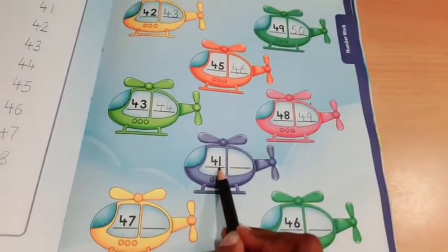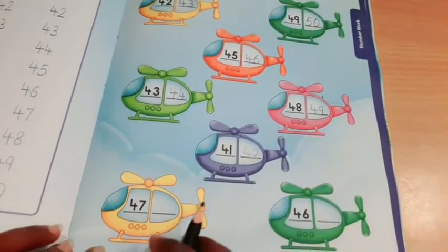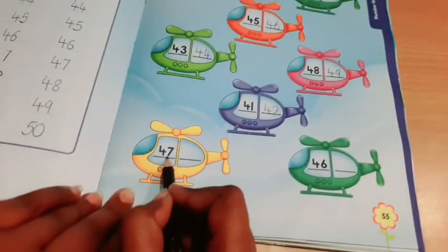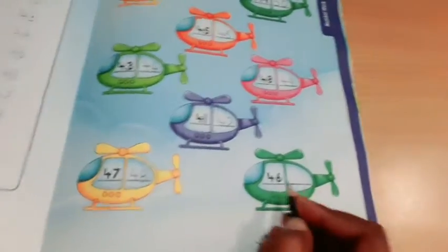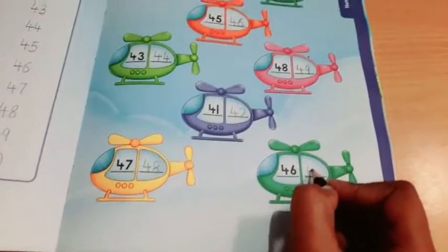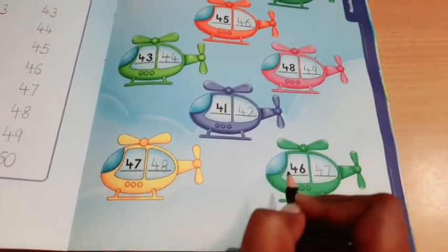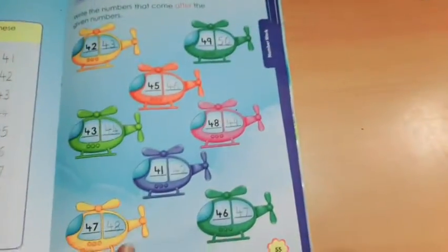Now this is 41, we will write 42. Next is 47, we will write 48. Now the next number is 46, we will write 47. Okay students? In this way you have to complete this page.